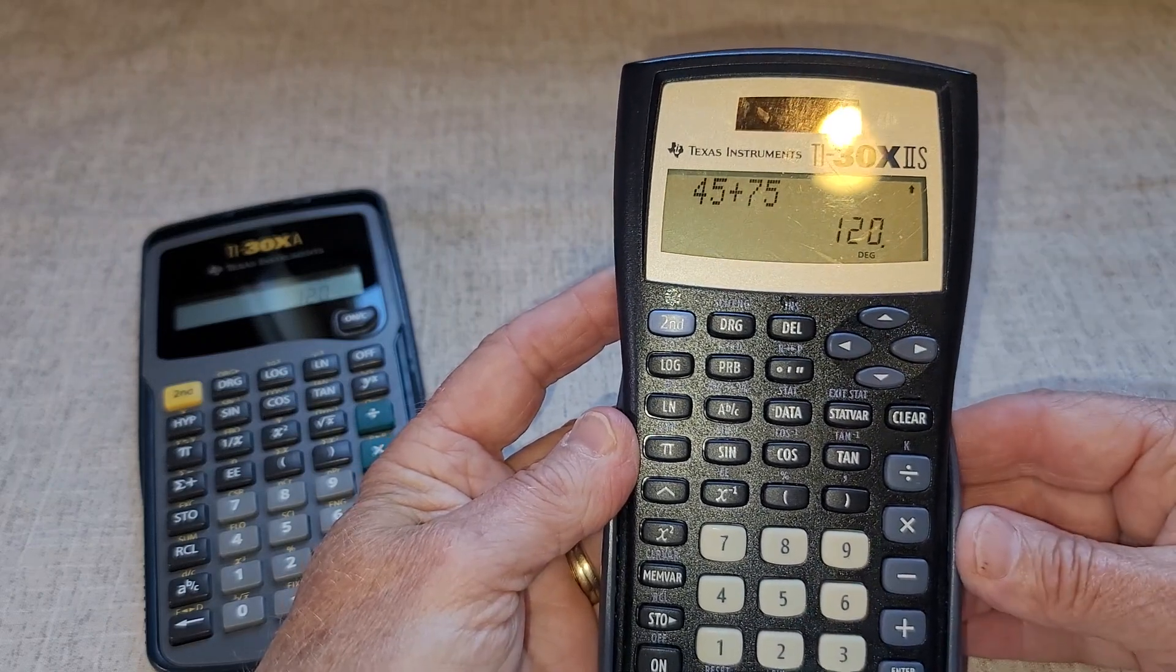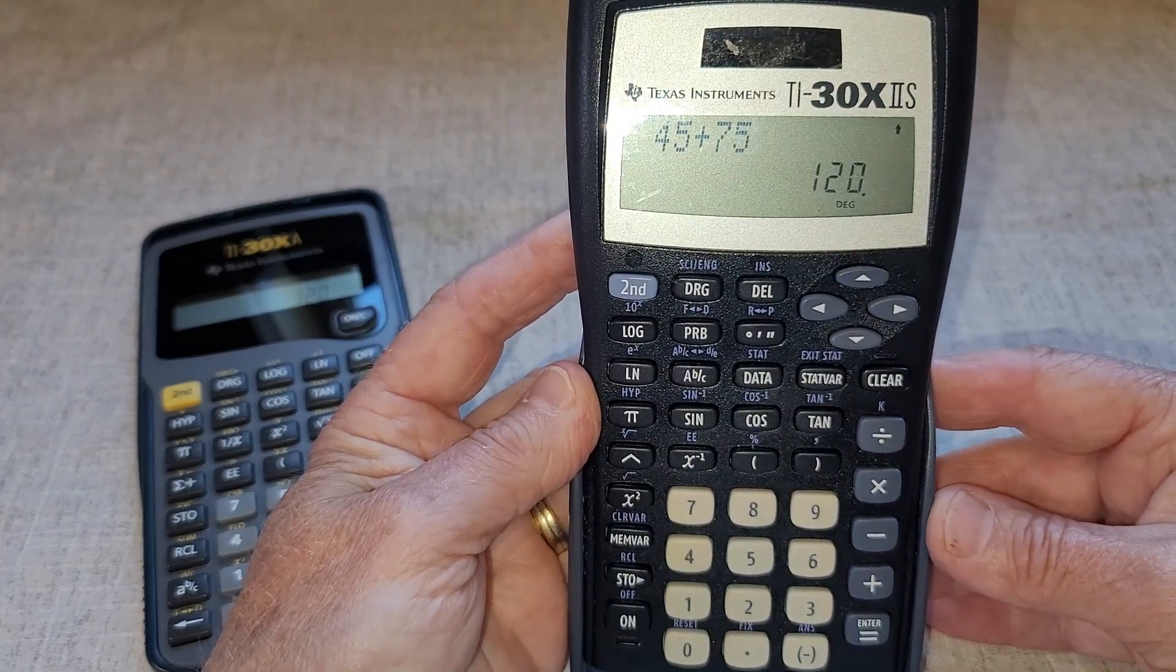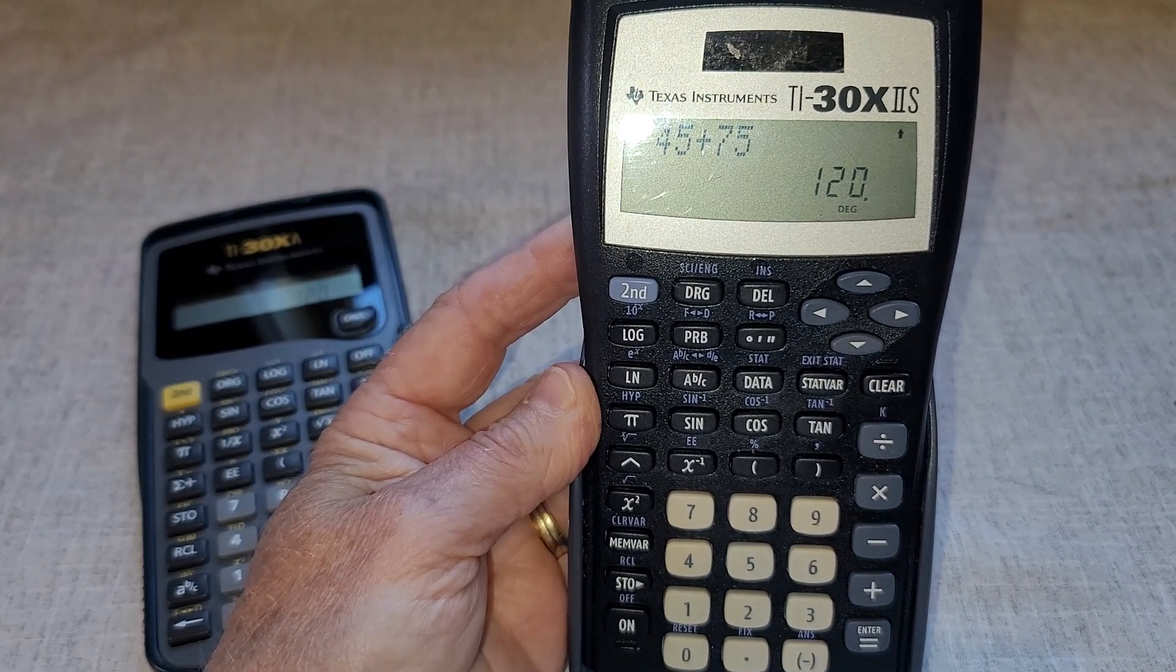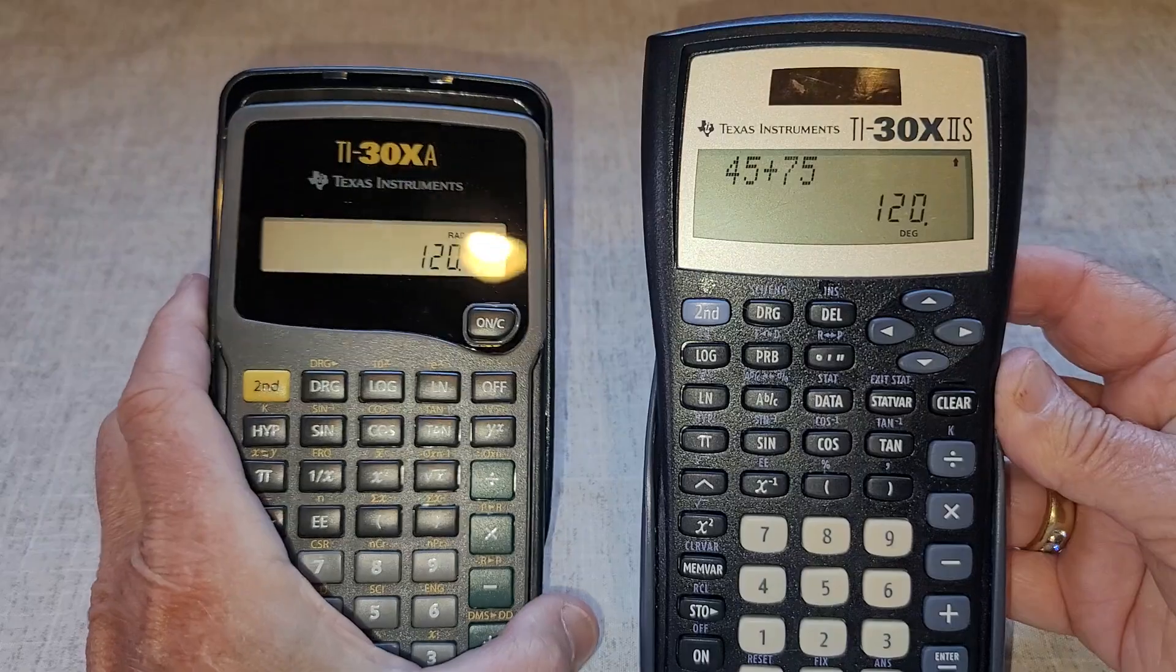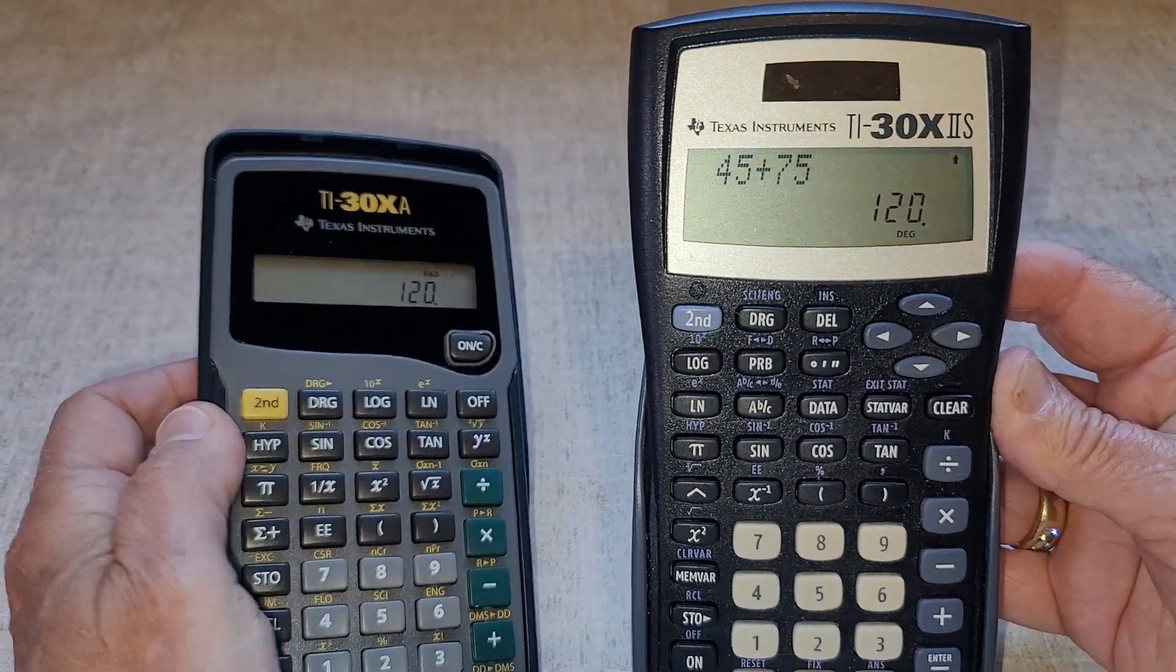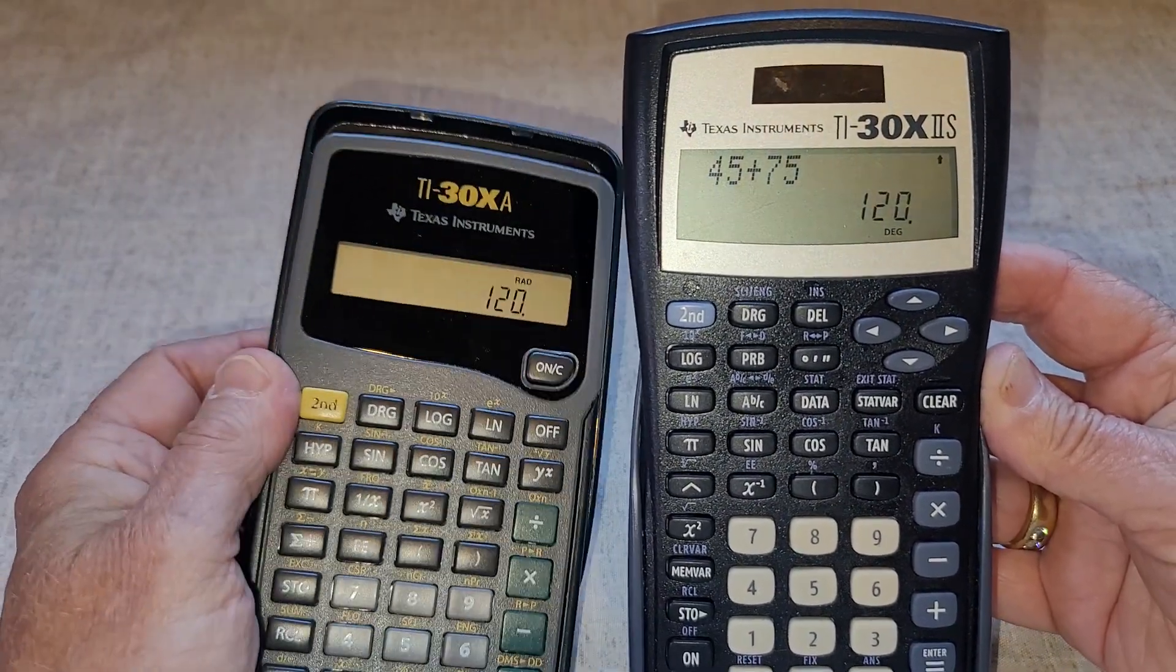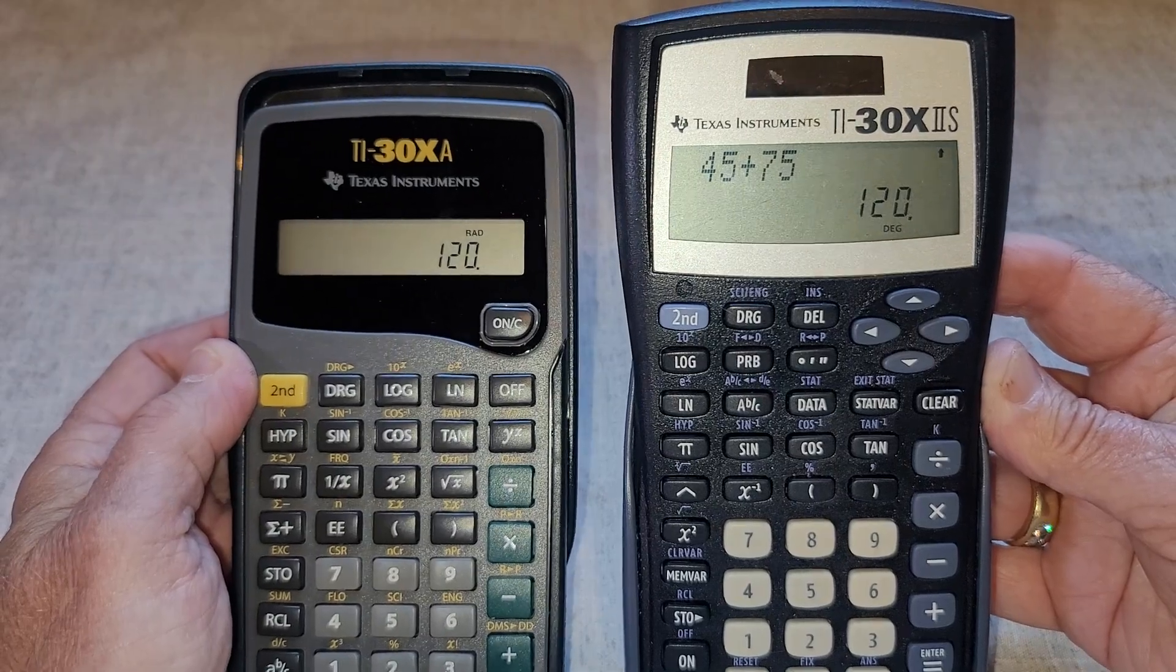The one on the right, the 30X2S, is solar powered, so you don't have to worry about replacing a battery. The 30XA is battery powered, so if you need to replace the battery, then you would remove the little screws on the back and replace the battery.